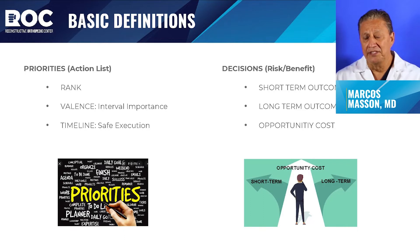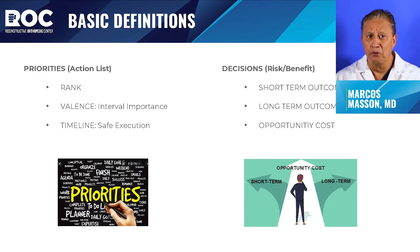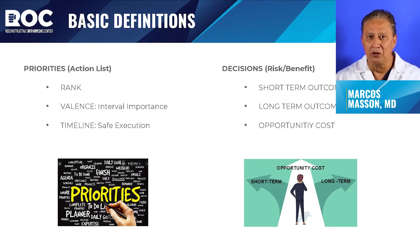You must also learn how to prioritize and make decisions. Safety should always be first, but all priorities should be ranked in order. The valence — or importance — of the ranking between each priority is very important, and the timeline of decision-making for safe execution must be designated so that you're not in a hurry and risk creating an accident in a high-risk scenario. Decisions that require risk-benefit analysis must be done understanding short-term outcomes, long-term outcomes, and the opportunity cost missed if you choose one event over the other.